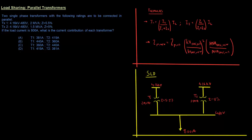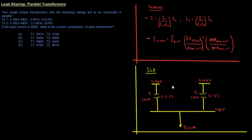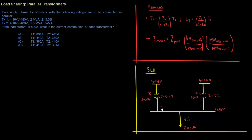Looking at the single-line diagram: we have transformers T1 and T2, both with primary voltage 4.16 kV connected to a 480 V bus. T1 is 2 MVA with 5.5% impedance, T2 is 1.5 MVA with 5% impedance. The load current IL is given as 800 amps. What we need to find is I1 and I2.